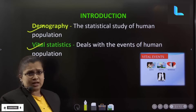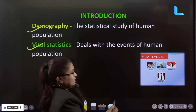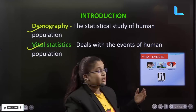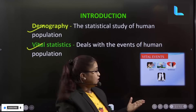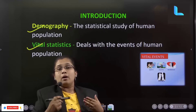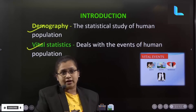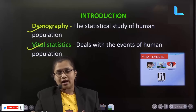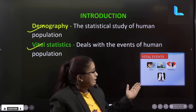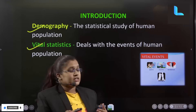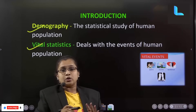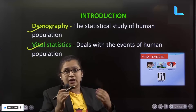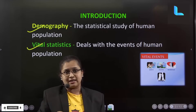In vital statistics, the vital events include birth, death, marriages, and divorces. These are recorded and calculated. Birth, death, marriages, and divorces — these are vital events. This is vital statistics.